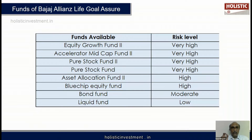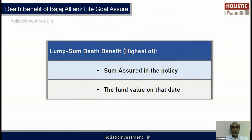Now we have to analyze this policy by understanding the benefits. The first benefit is the death benefit and the second is the maturity benefit. For the death benefit, there are two values - whichever is higher will be given to the nominee in case of the unfortunate death of the policyholder. The first value is the sum assured, and the second is the fund value on the date of death.